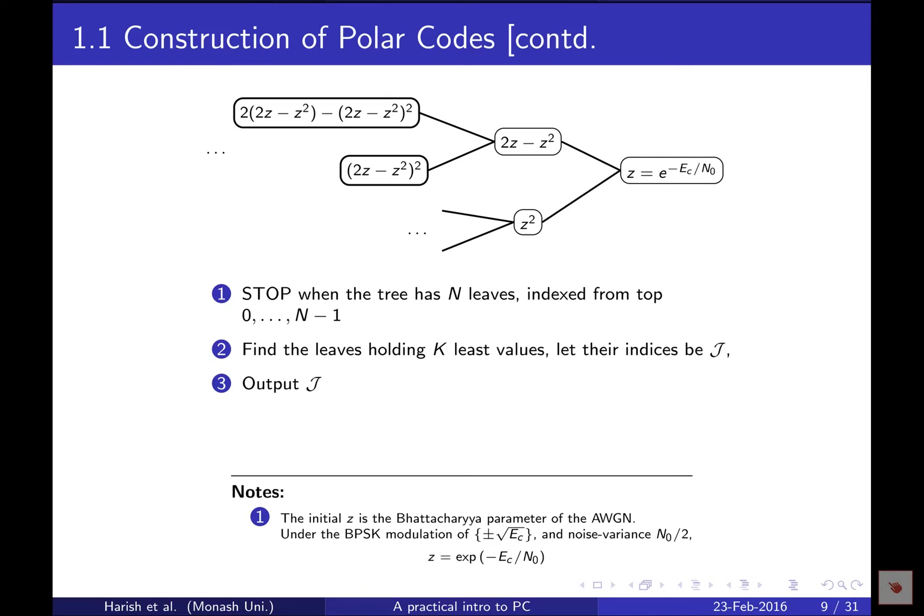What are we going to do in this construction? We have to start with some initial value because we're going to use a two-way recursion. Given a single value, we generate two values using two different functions. This initial value is critical and depends on the channel condition, the SNR or design SNR.